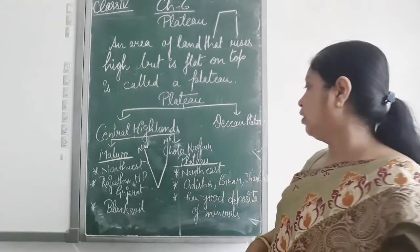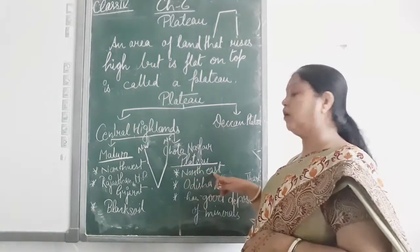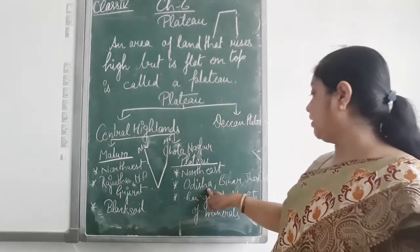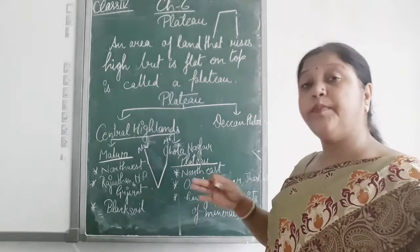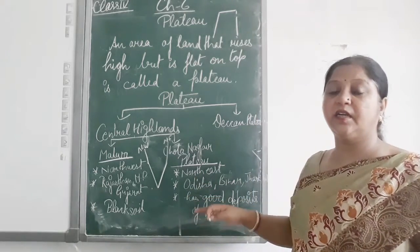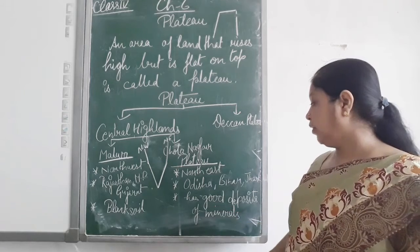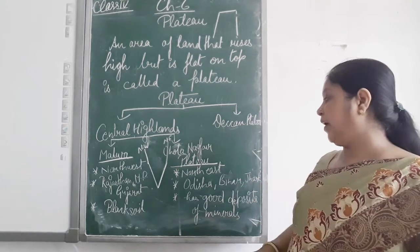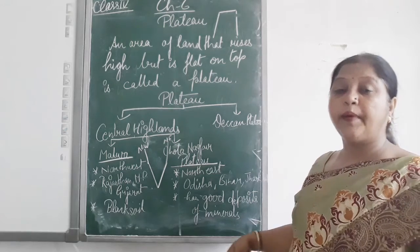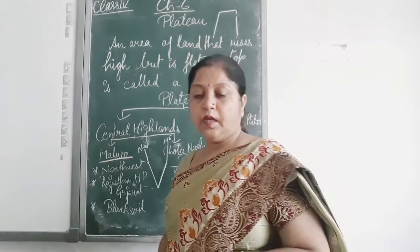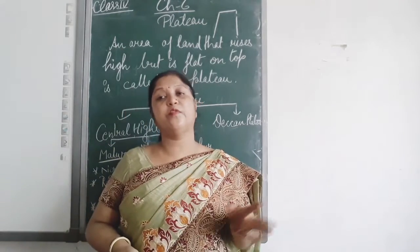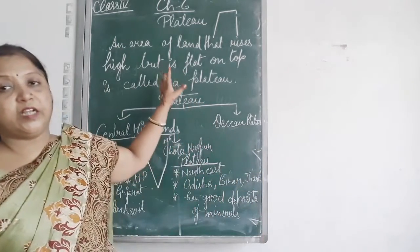Now, Chota Nagpur Plateau lies in the North East direction. Which states? Jharkhand, Odisha, Bihar, and Chhattisgarh. Chota Nagpur Plateau has a good deposit of minerals — coal, mica, bauxite, and other minerals also.